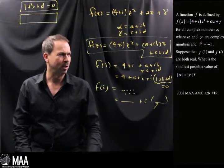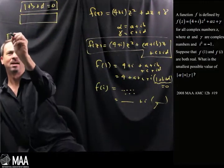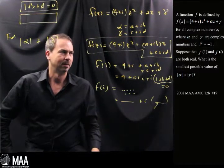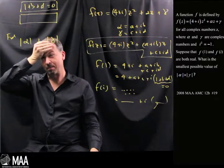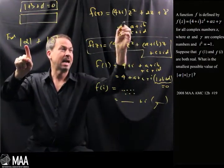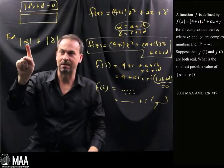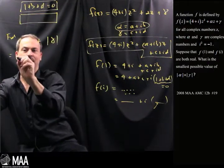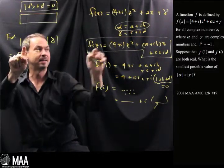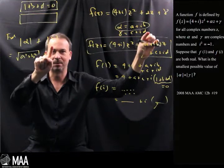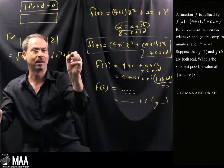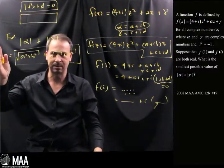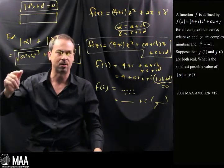Before I even do that, I'm just trying to see, is that going to lead somewhere? I've forgotten what was the question. The question was find the smallest possible value of |α| + |γ|. I've got to remember what this means. In complex numbers, what is the modulus of a number mean? Well, alpha is a+ib. The modulus of the complex number is its distance from the origin. So it's a units in the real direction, b units in the imaginary direction. This is just Pythagoras' theorem. This is just √(a²+b²) plus the distance of this complex number from the origin, which is √(c²+d²). Somehow, the question wants us, what is the smallest possible value of that?